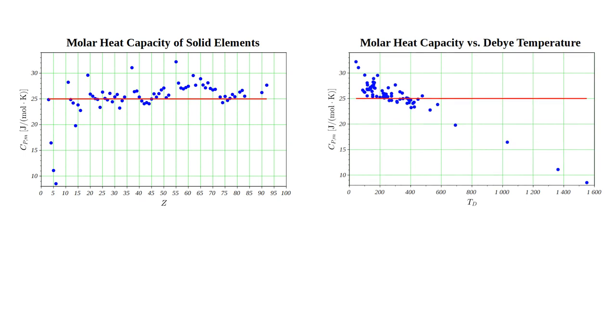On the right, these heat capacities are plotted versus Debye temperature. There is a very strong correlation between increasing Debye temperature and decreasing heat capacity. Room temperature is about 300 Kelvin. We see that all elements with heat capacities less than 24 joules per mole Kelvin have Debye temperatures greater than 300.